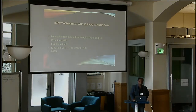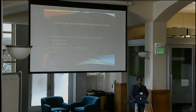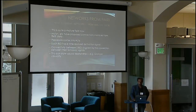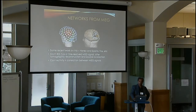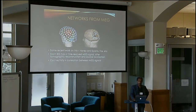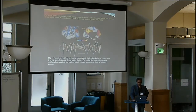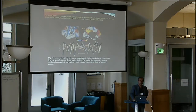I'll rush through this because I want to get to the modeling, but you can obtain these kinds of networks from in vivo imaging data — MRI, structural MRI, diffusion-weighted MRI, functional BOLD MRI, and even magnetoencephalography. You can obtain functional networks from fMRI, but also from MEG, where you put electrodes on the scalp, do source reconstruction to understand where the signal is coming from, and correlate signals from different brain regions to obtain functional connectivity networks. People have found that different parts of the brain belong to two different anti-correlated networks.